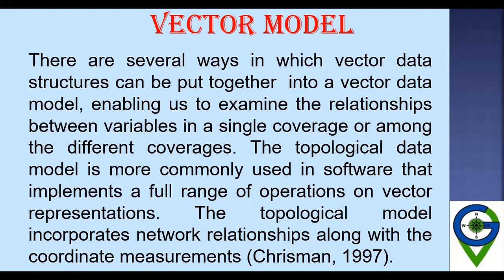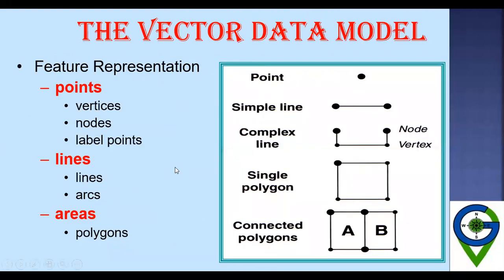There are several ways in which vector data structure can be put together into a vector data model, enabling us to examine the relationships between variables in a single coverage or among different coverages. The topological data model is more commonly used in software that implements a full range of operations on vector representation. The topological model incorporates network relationships along with coordinate measurements. Vector data can be represented using points, lines, and areas — with vertices and nodes for points, arcs for lines, and polygons for areas.